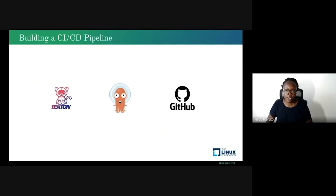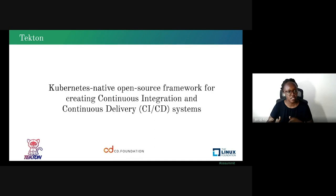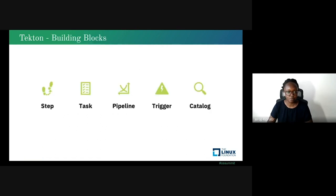Thanks, Preeti, for introducing the CICD principles. Next we look at understanding Tekton. Tekton is a Kubernetes-native open source framework for creating continuous integration and continuous delivery systems. It provides Kubernetes-style custom resources for declaring CICD-style pipelines. Tekton is built on five core building blocks: step, task, pipeline, trigger, and catalog.